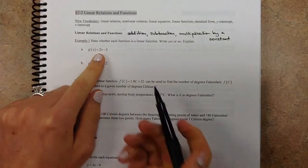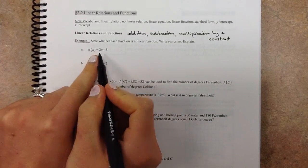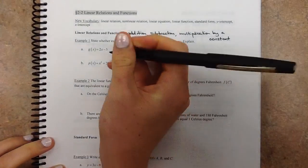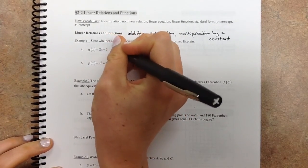So here, here's what we've got. This is x being multiplied by a constant. That's fine. Then you subtract 5. That's fine. So this is linear.